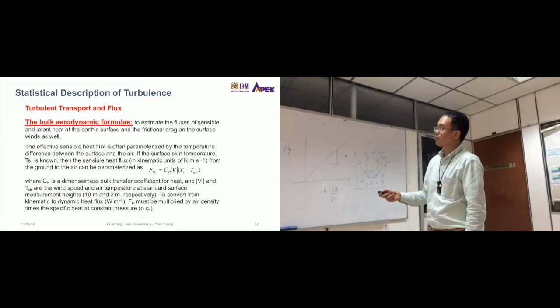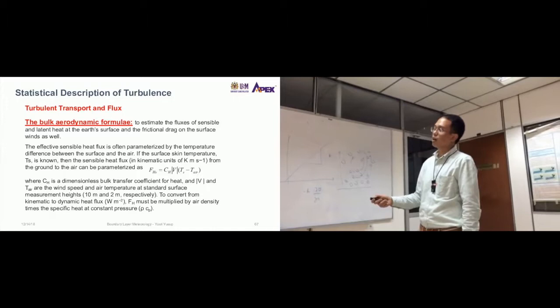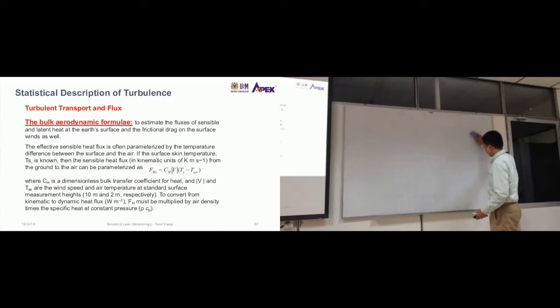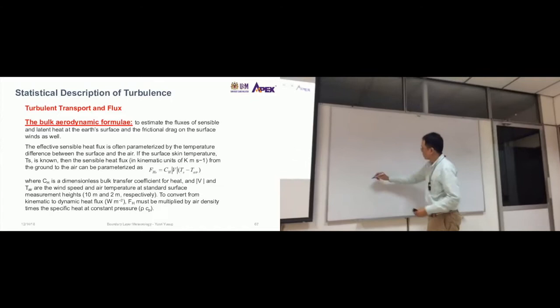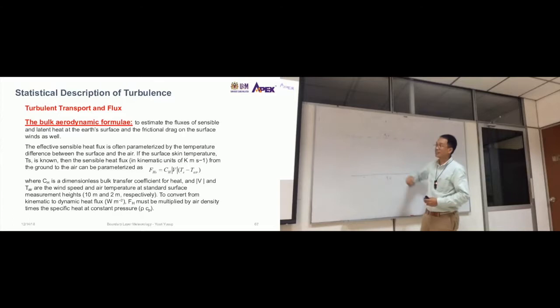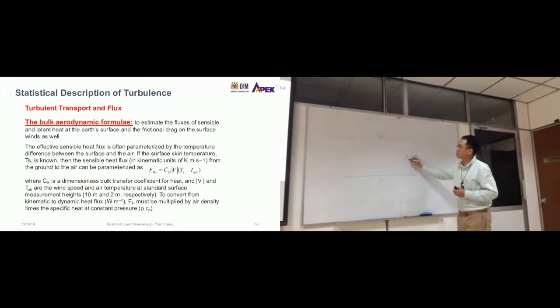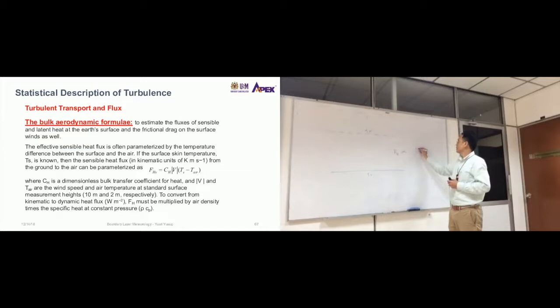So the effective sensible heat flux is often parameterized by the temperature difference between the surface and the air. If the surface skin temperature, TS, is known, then the sensible heat flux—this is the unit of the sensible heat flux, Kelvin meter per second—from the ground to the air can be parameterized as this. Basically, same as just now. This is the surface and this is another layer. The skin temperature is here, TS, then TA is the air temperature, and the flux is proportional. Let's say this is flux H for heat, sensible heat. It's proportional to TS minus here. That make sense?